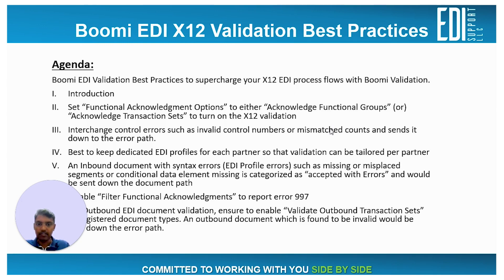There are two types of validations. The first is validations for interchange control errors — errors because of invalid control numbers or mismatched counts. When an inbound external document has interchange control errors, the inbound external processor identifies it as an error document and sends it down the error path. The second type is syntax errors, where the EDI document has missing or misplaced segments, or a conditional data element is missing.